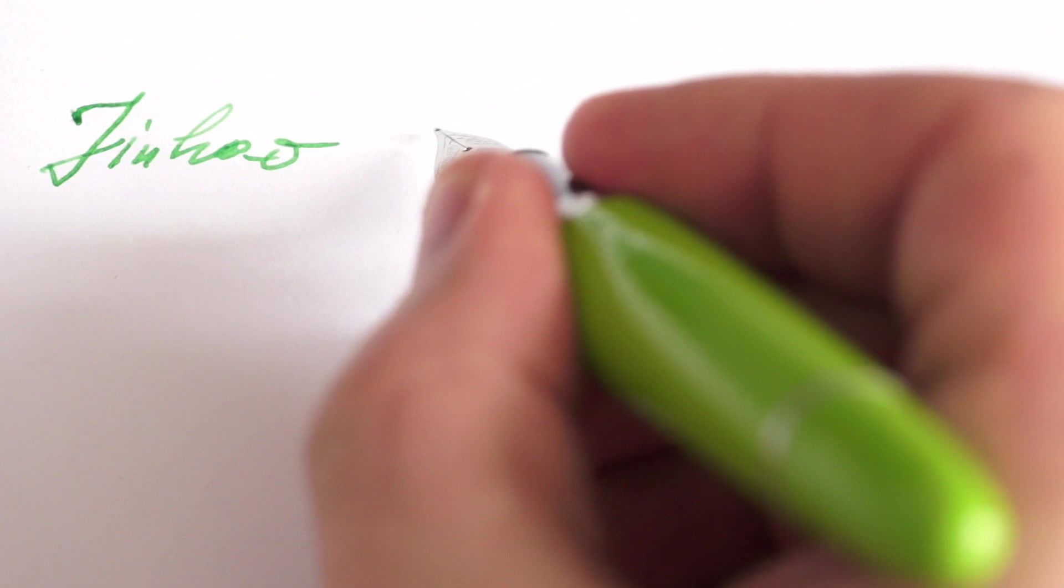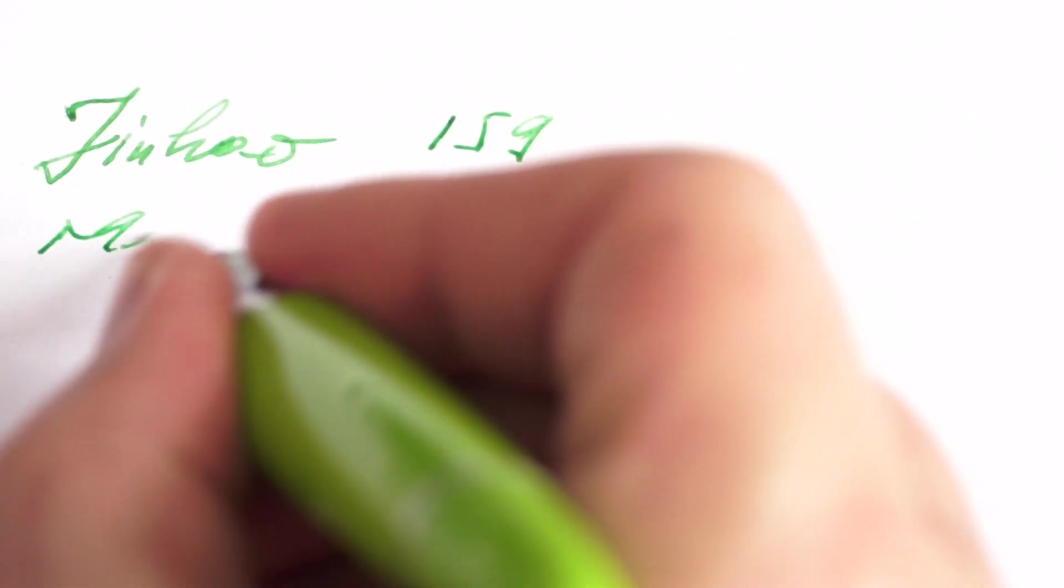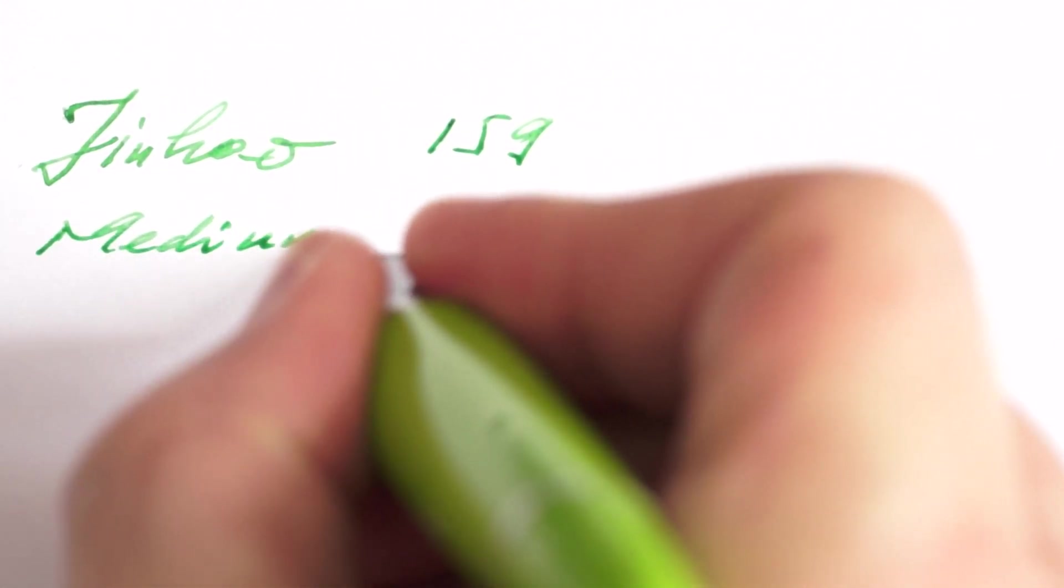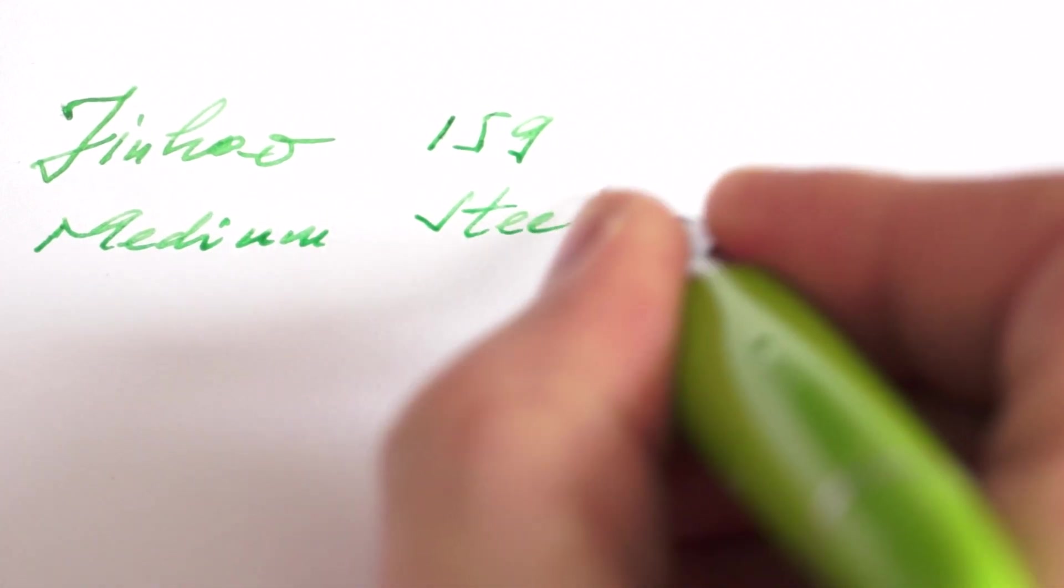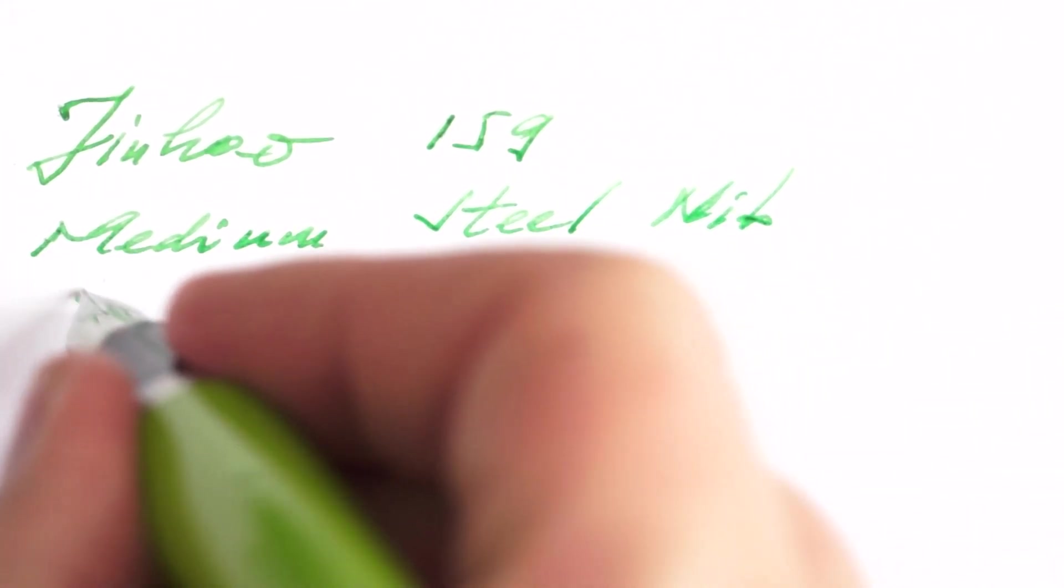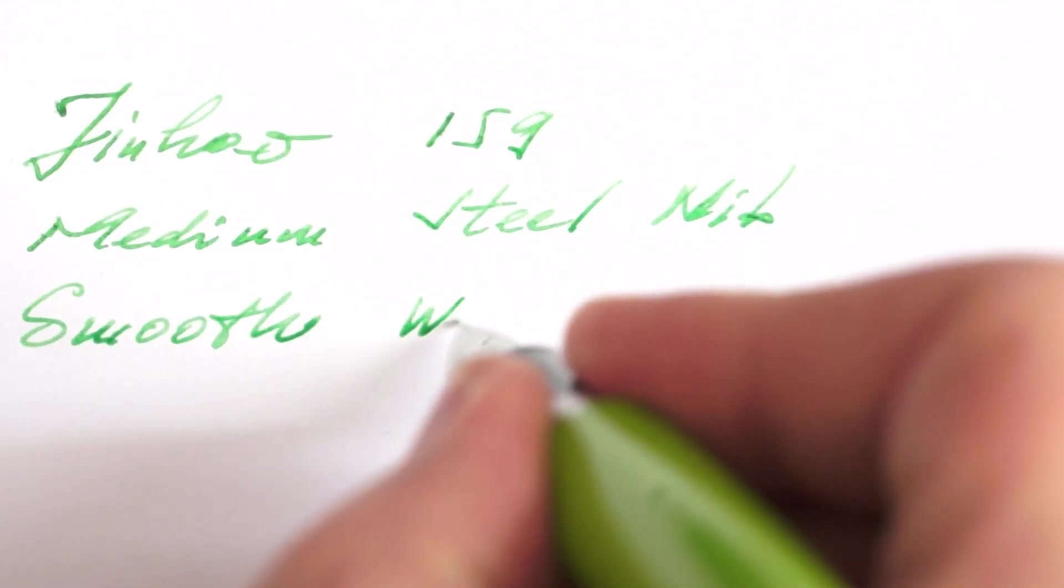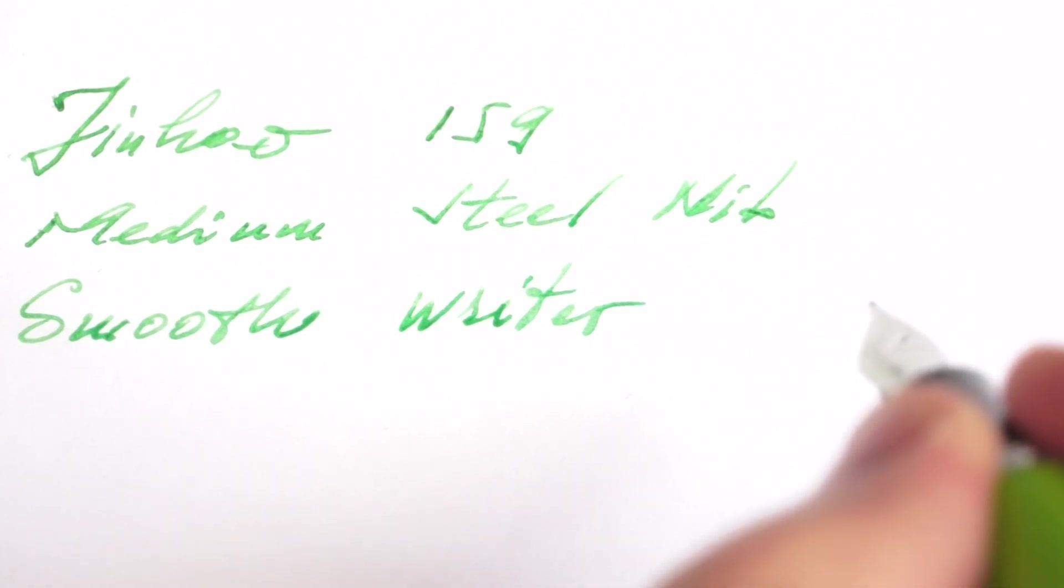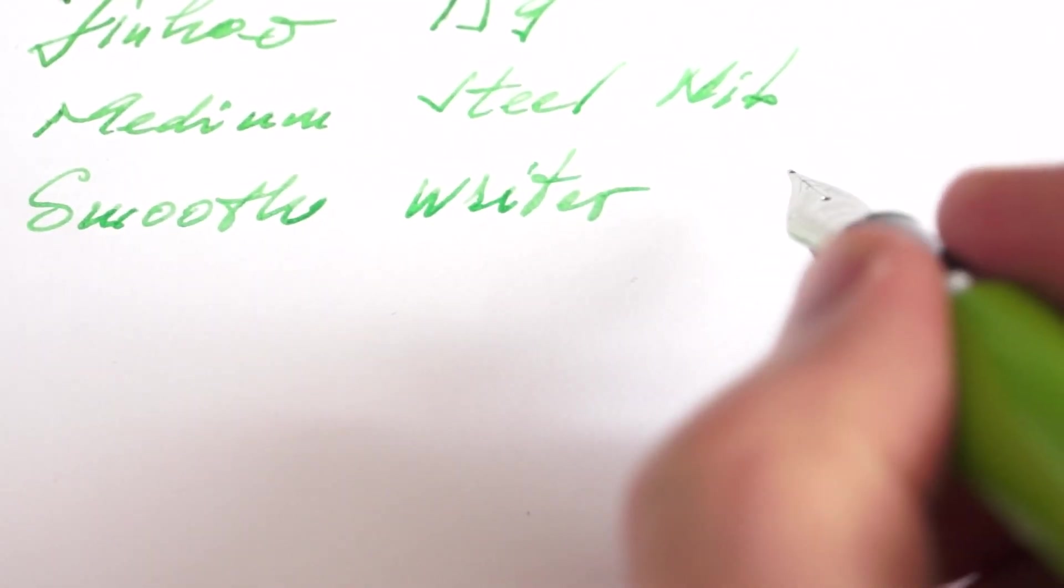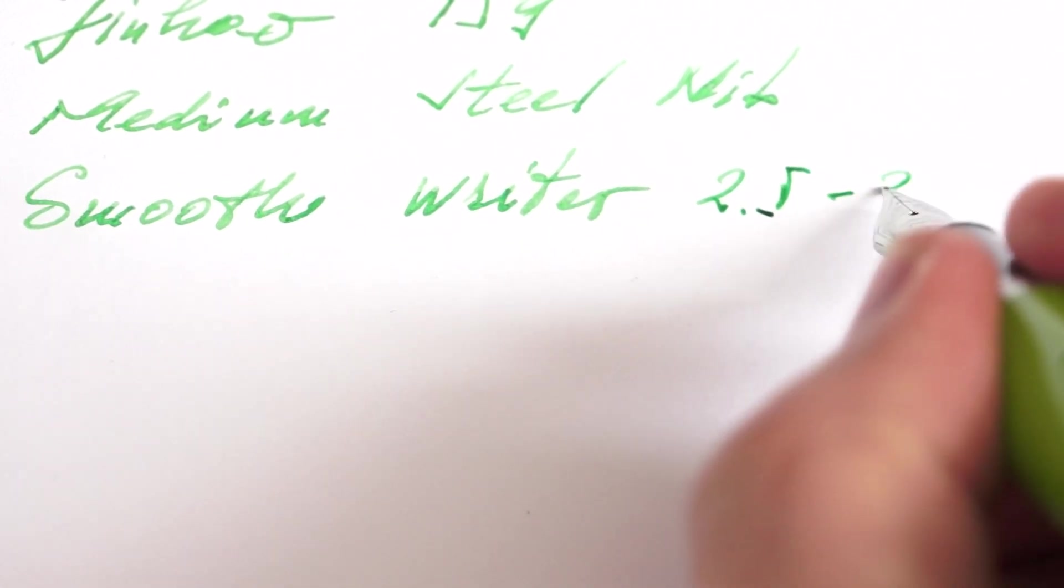So this Jinhao 159 pen, it's a medium steel nib, it is quite a smooth writer. No complaints here. The smoothness is about maybe 2.5 to 3.